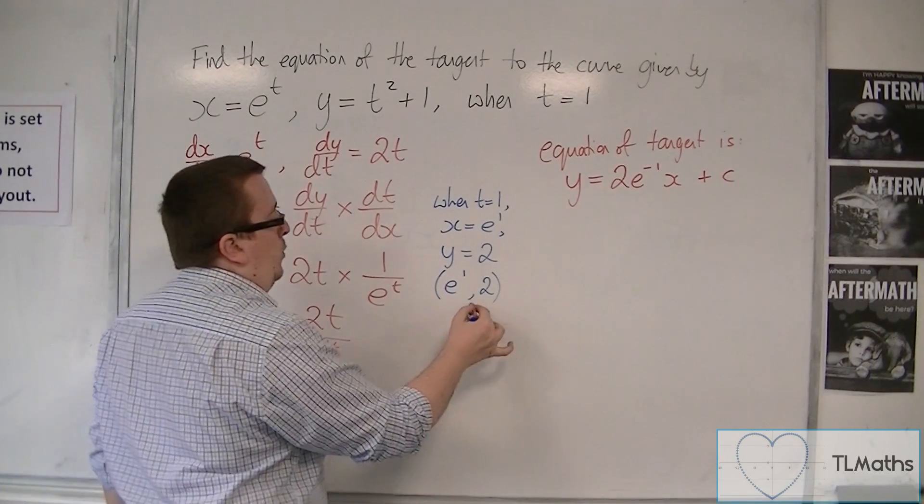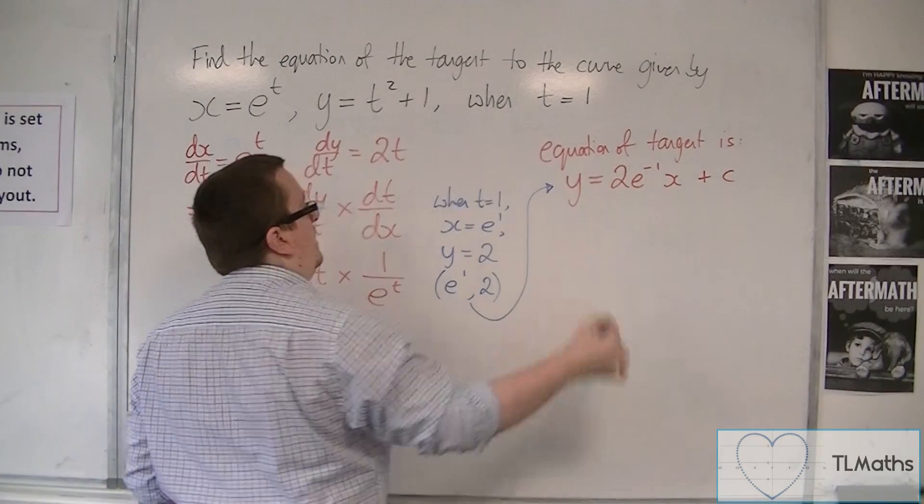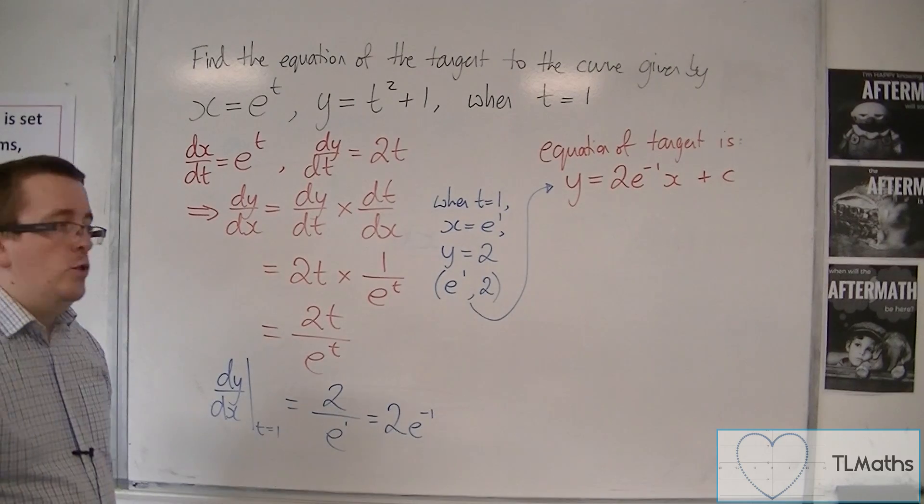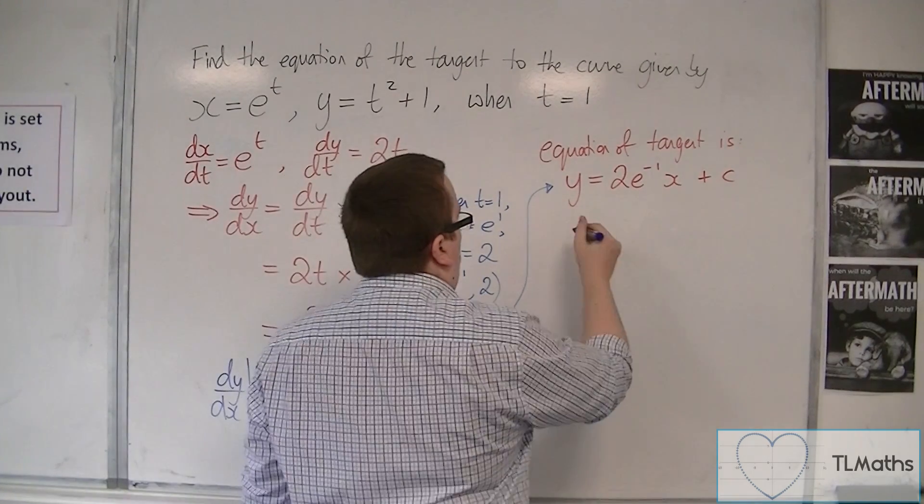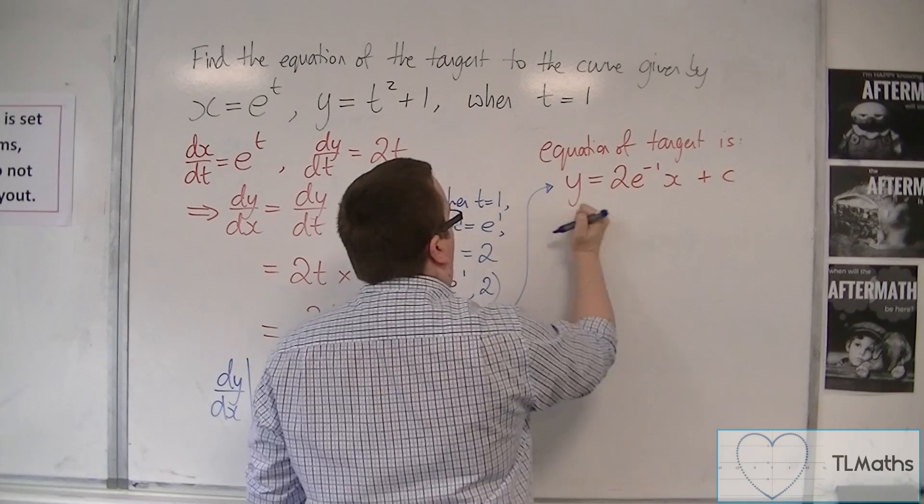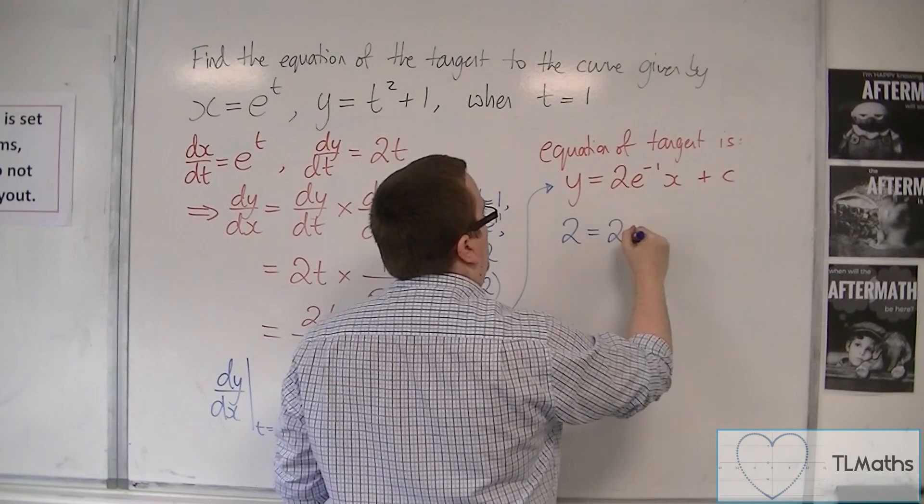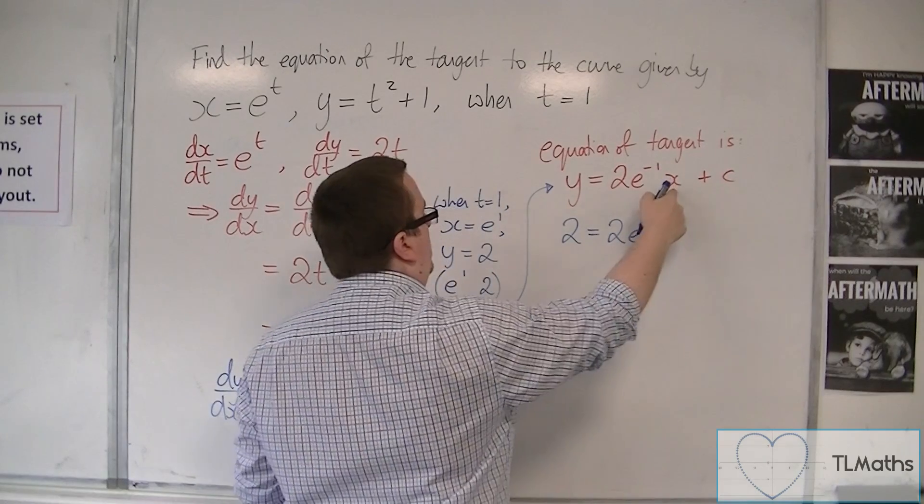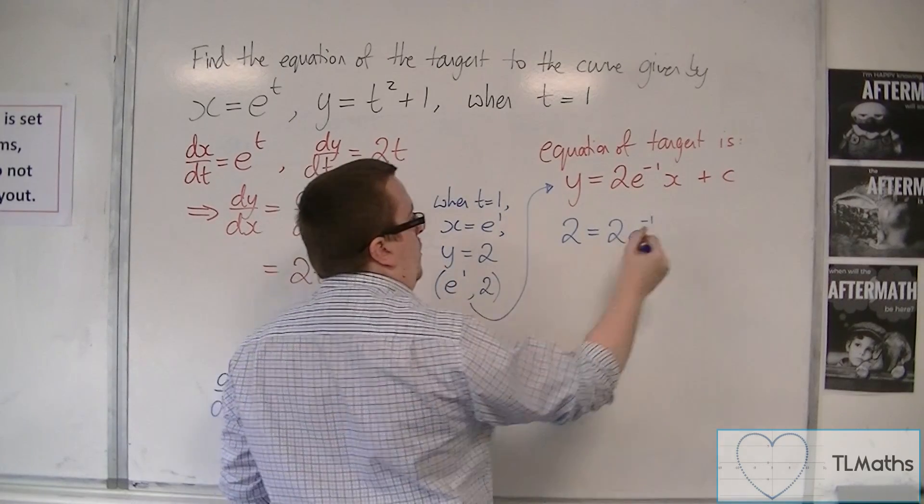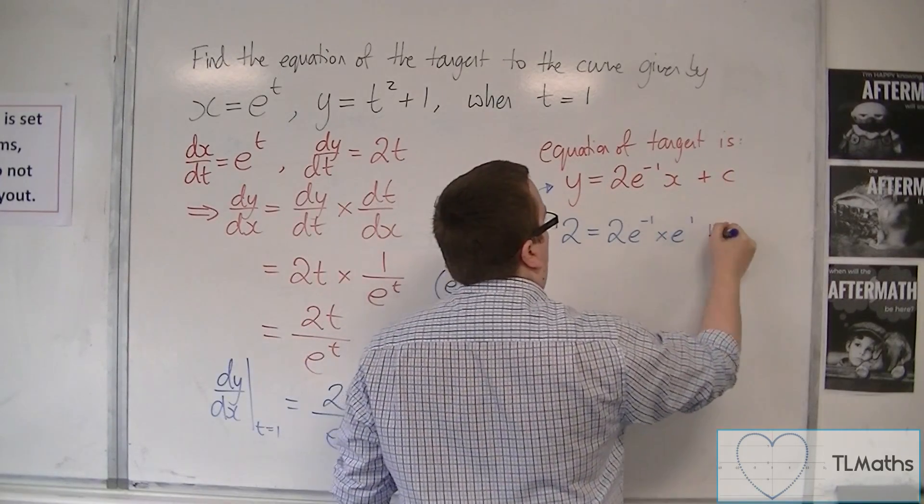And these are the coordinates that I need to substitute in to the equation of the tangent. So we would get y, or sorry, y is 2. So 2 equals 2e to the minus 1 times x, which is e to the 1, plus c.